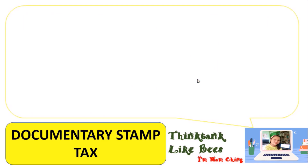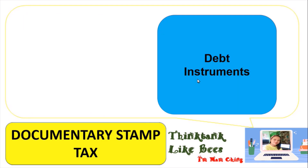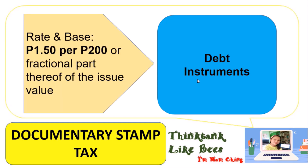For debt instruments, the base is the issue value. The formula is: issue value divided by 200, multiplied by 1.50 pesos per 200 or fractional part thereof of the issue value.